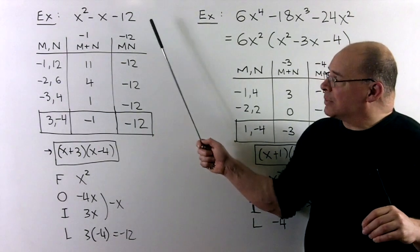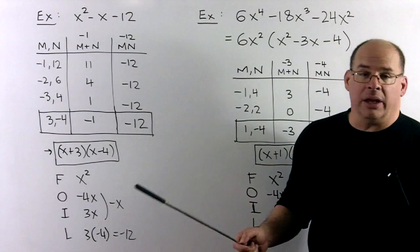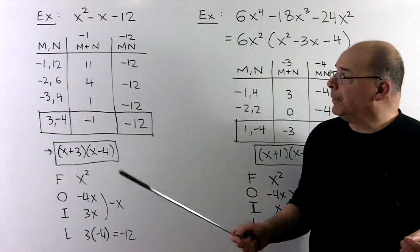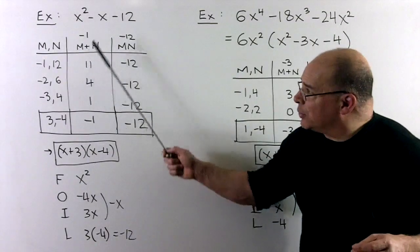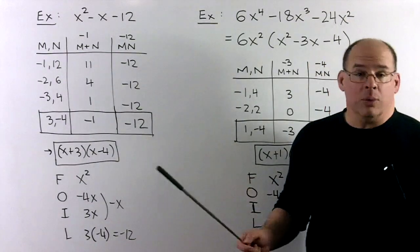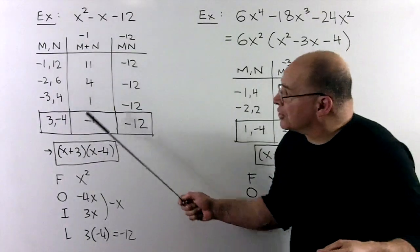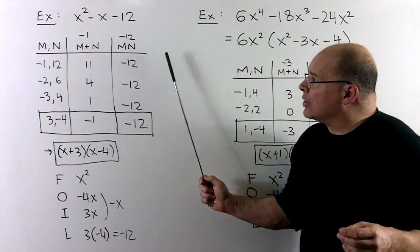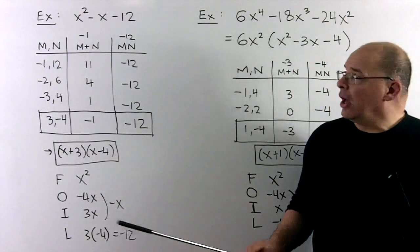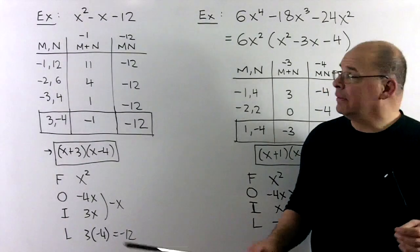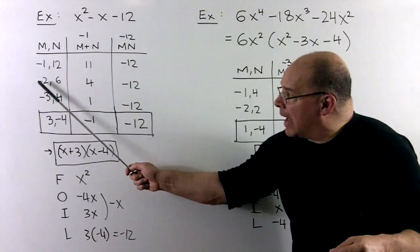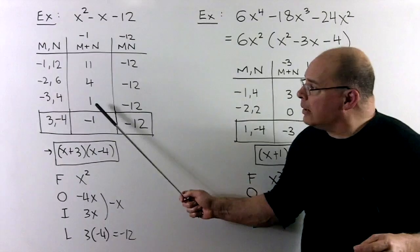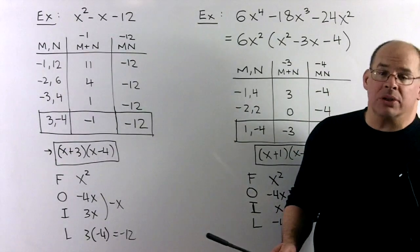Next example: x squared minus x minus 12. Here b is minus 1 and c is minus 12. We're trying to factor minus 12 such that the factors add up to minus 1. Setting up the table starting with 1 times 12, 2 times 6, 3 times 4. Since we need to get to minus 12, one factor must be negative: minus 1 and 12, minus 2 and 6, minus 3 and 4. Adding those gives 11, 4, and 1. We're almost where we want to be.